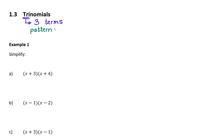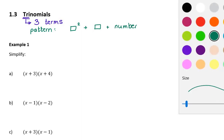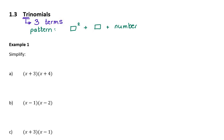So trinomials that can factorize have a certain pattern, and once we start doing this you'll see the pattern quite often. The pattern we're going to notice is we're going to have something squared, plus some of that whatever it was, and then plus a number. An example would be x squared plus 2x minus 3 — so you have something squared, then a term with just a single x with a coefficient, and then a number.